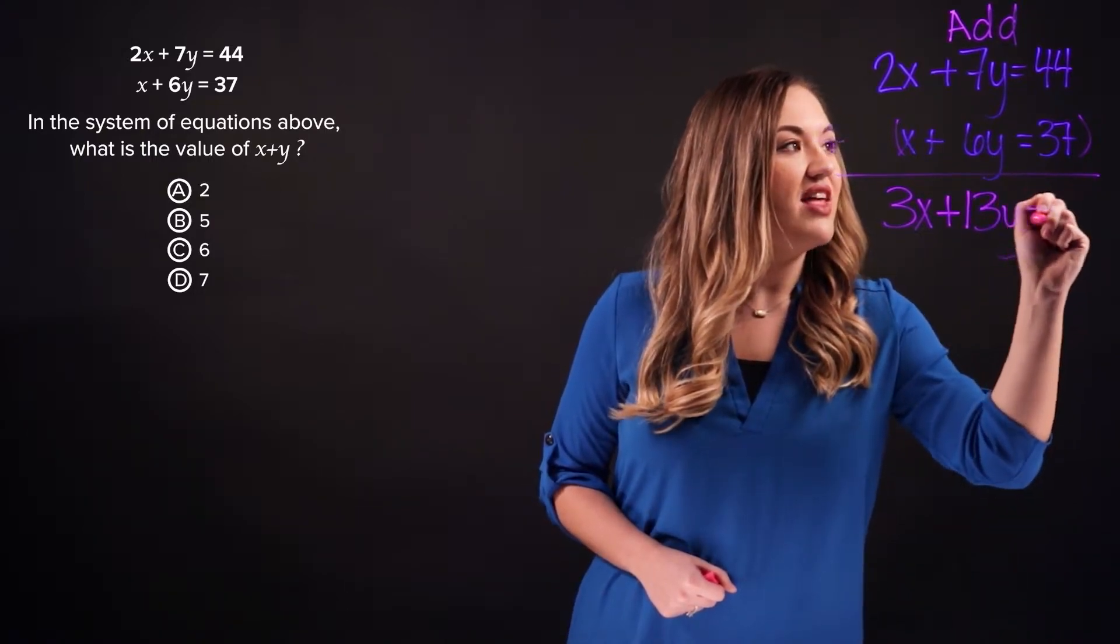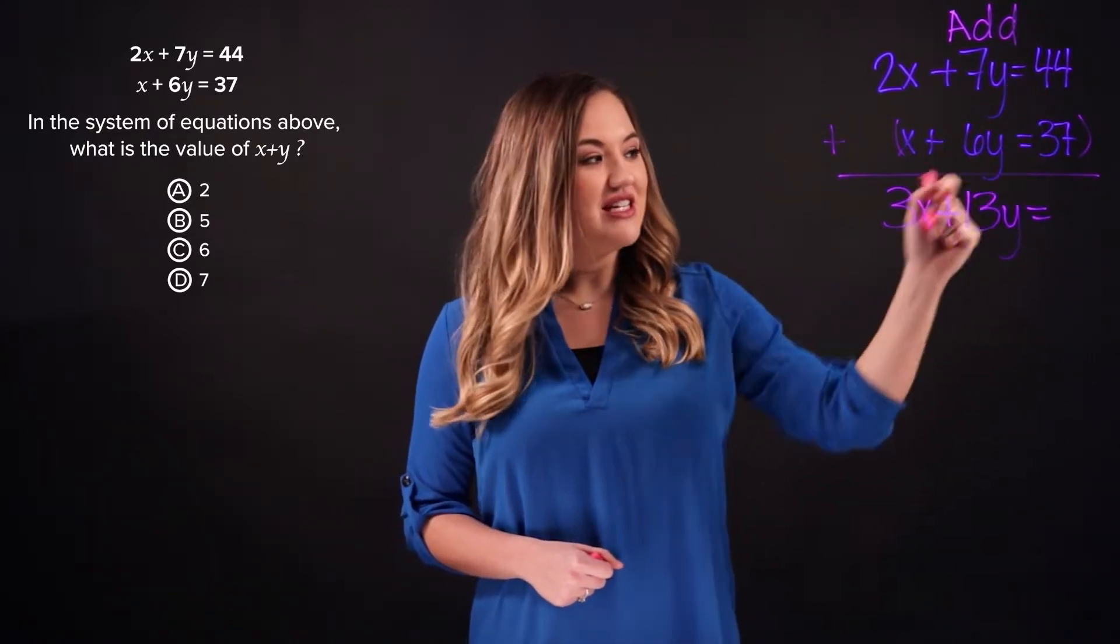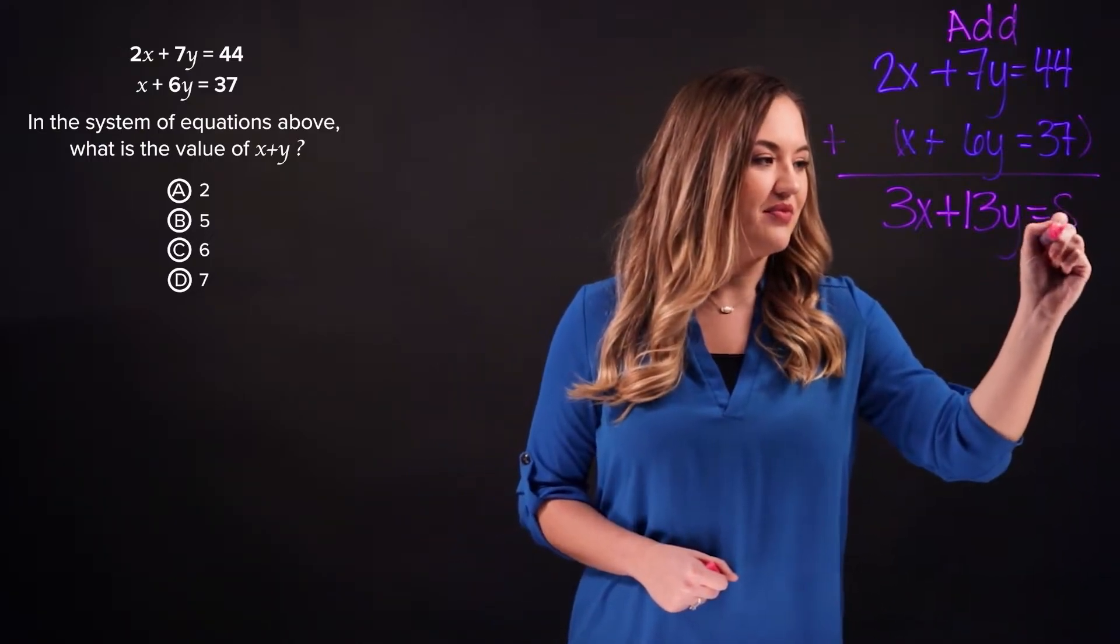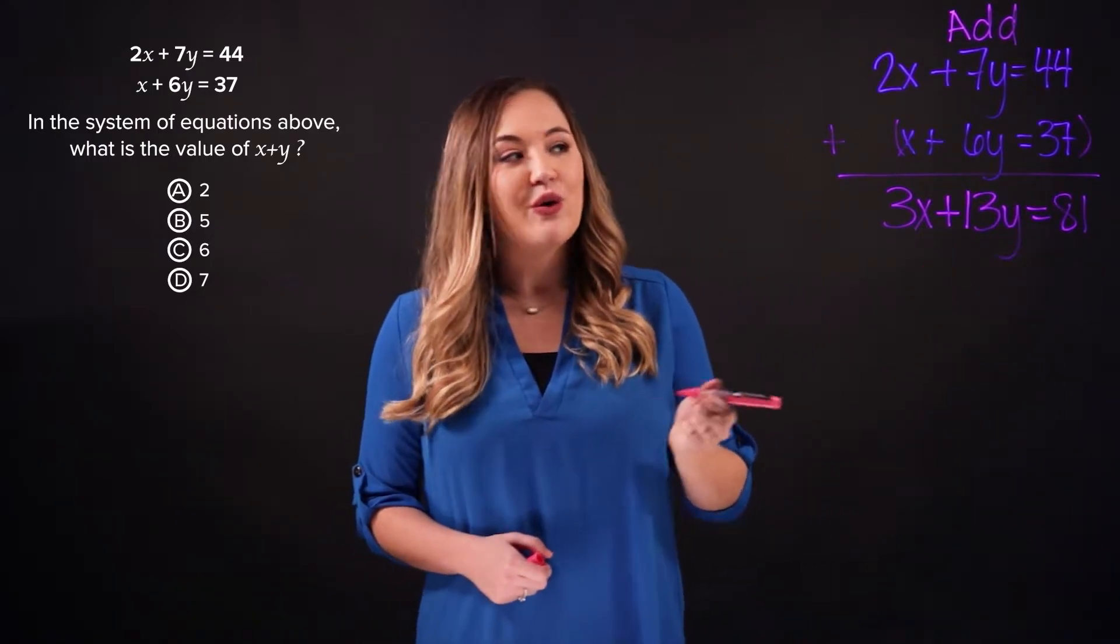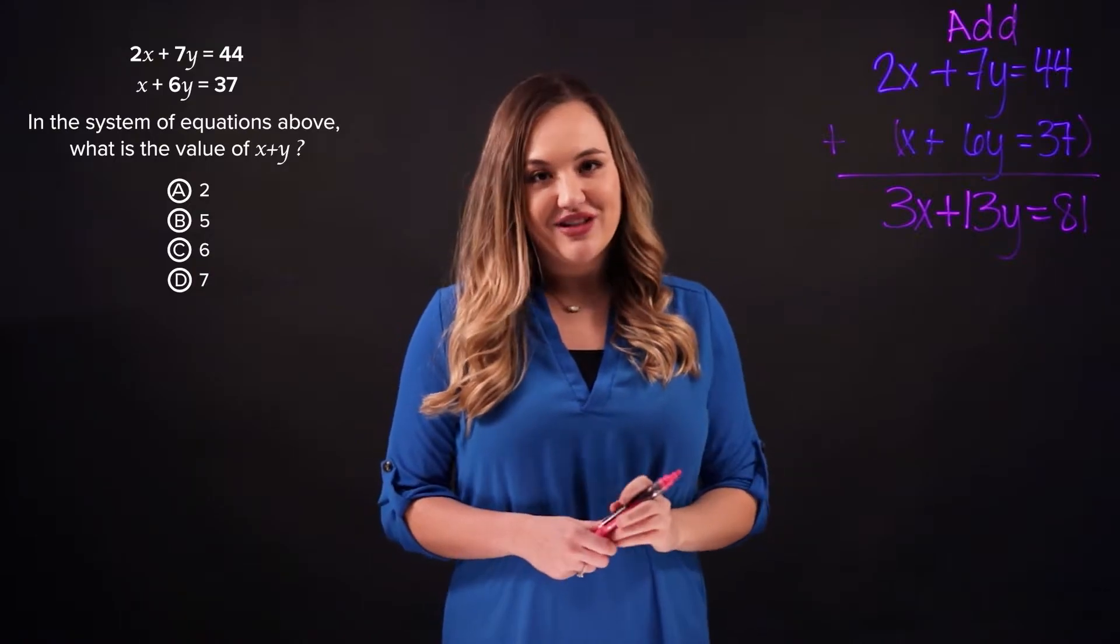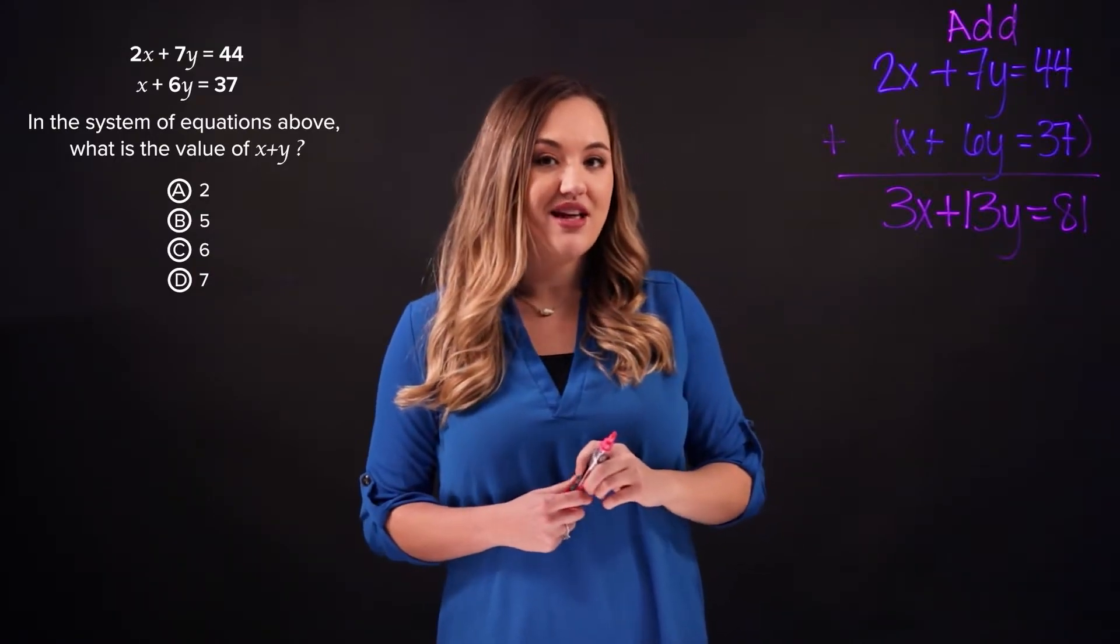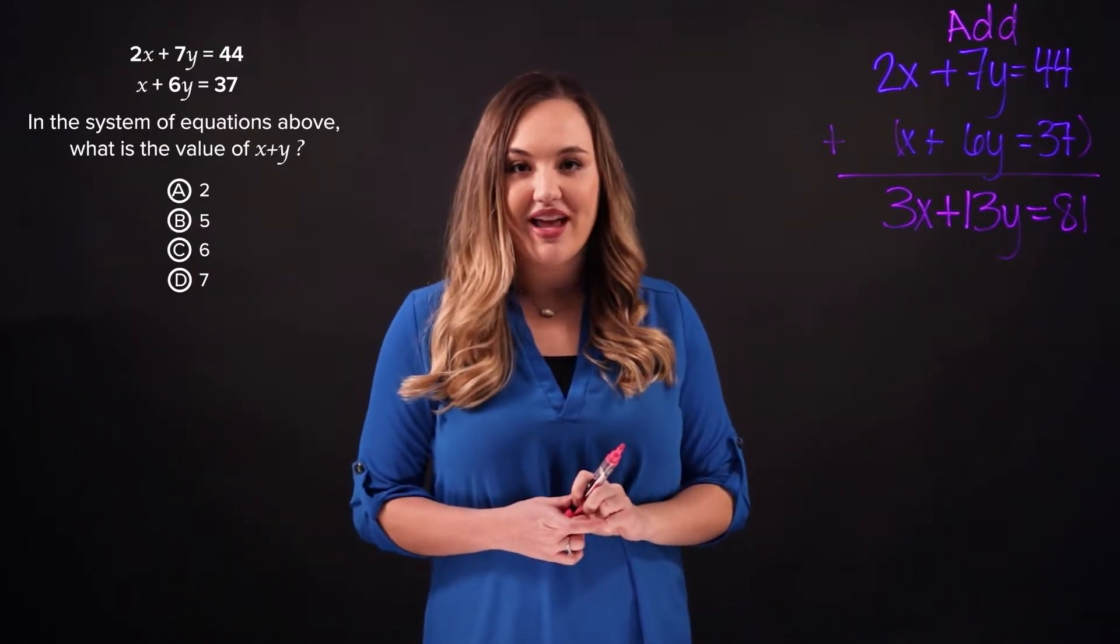And then we have 44 plus 37, which is 81. So adding these two equations in the given system of equations results in 3x plus 13y equals 81.